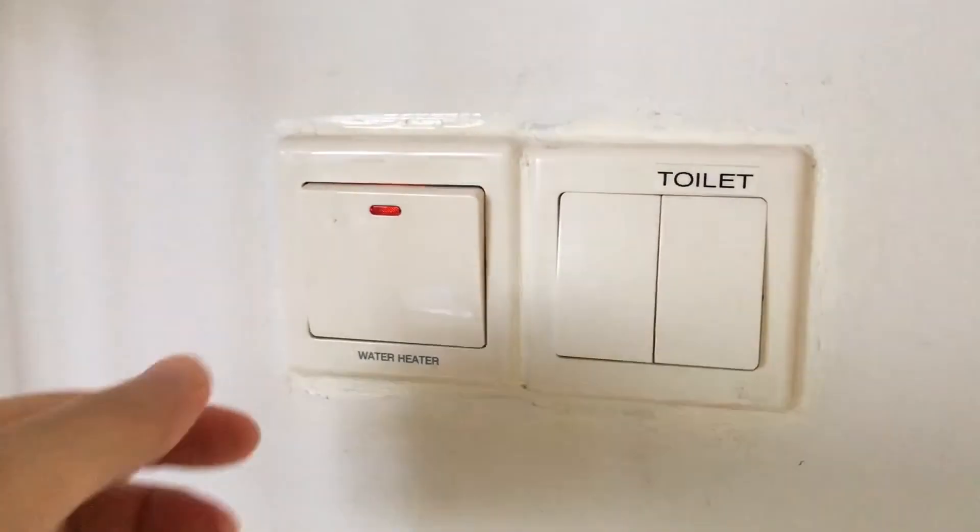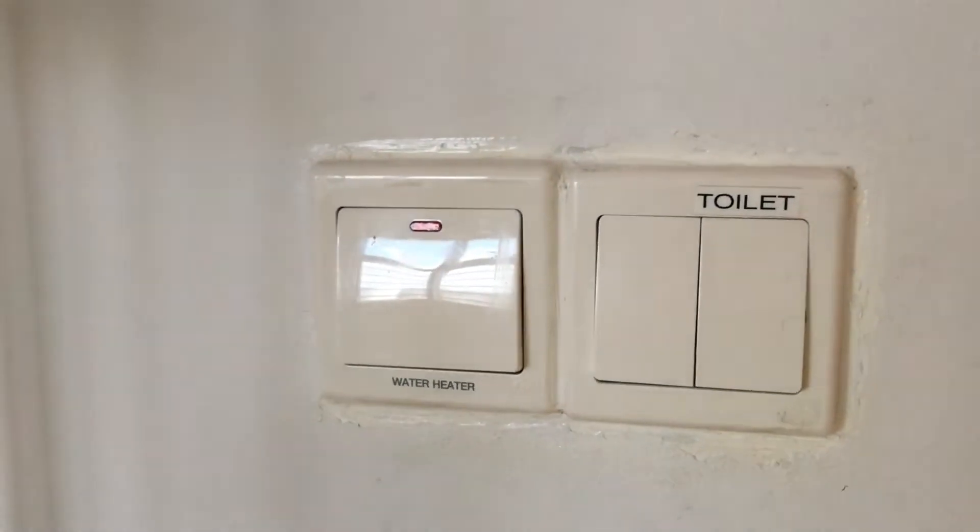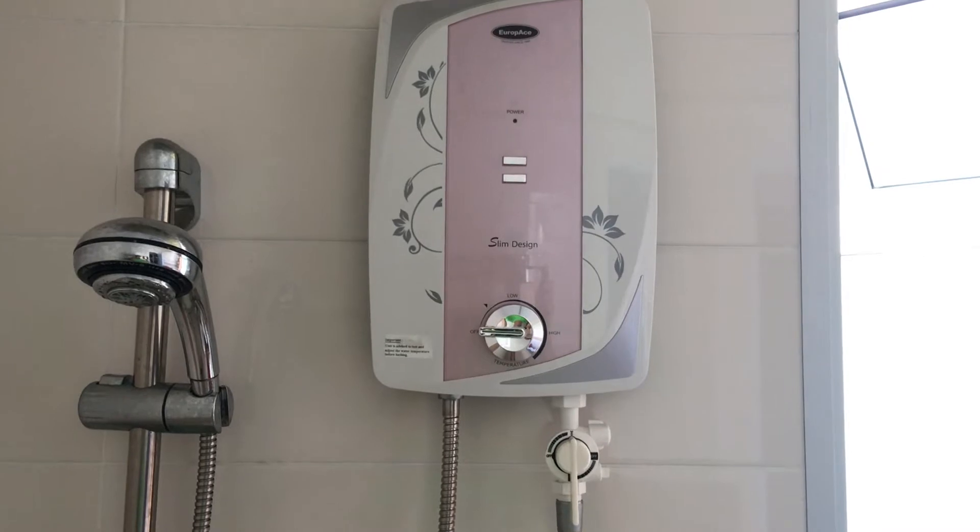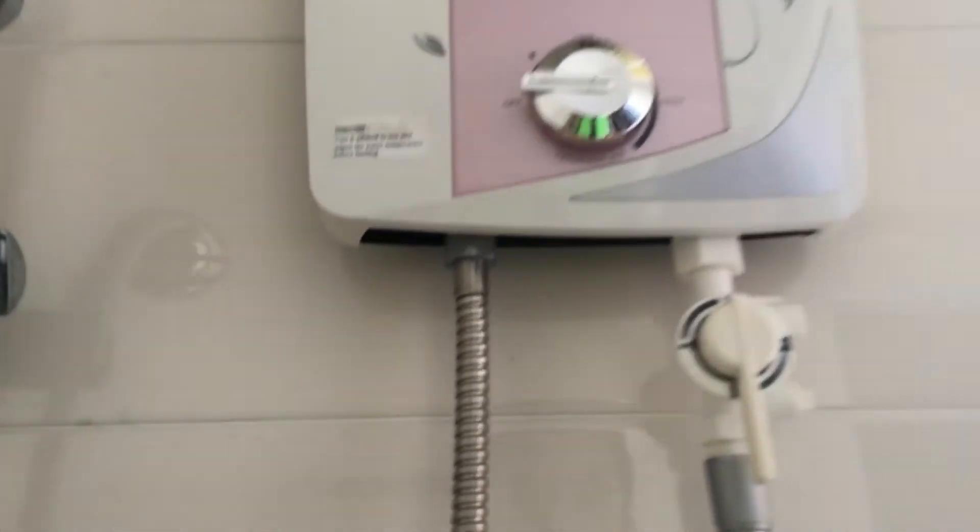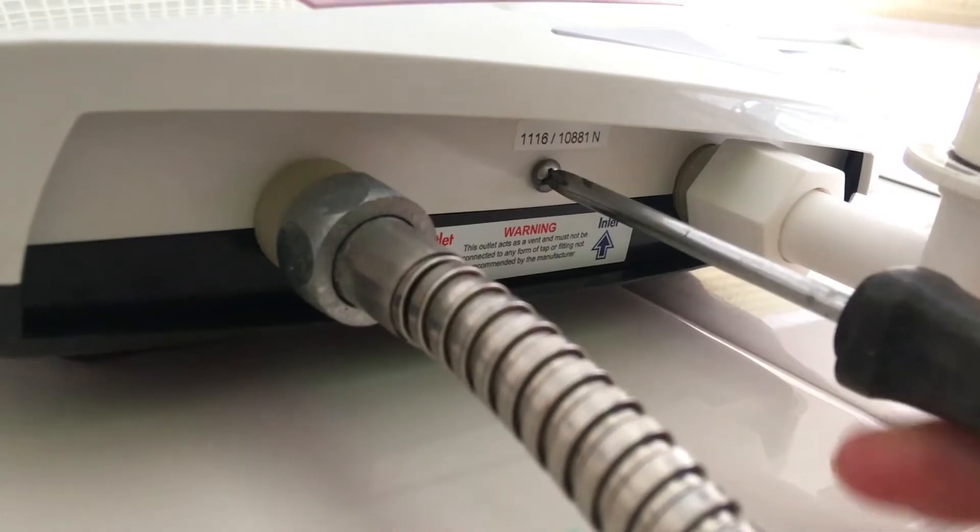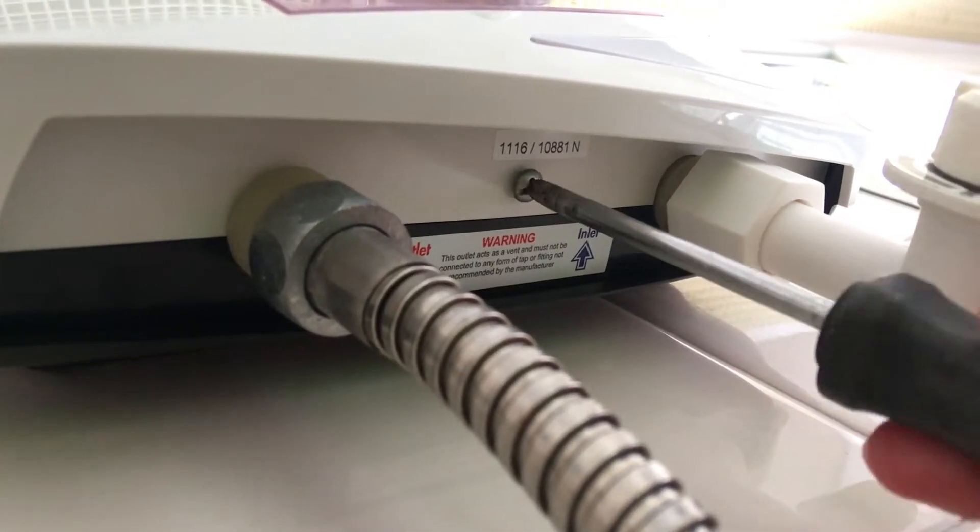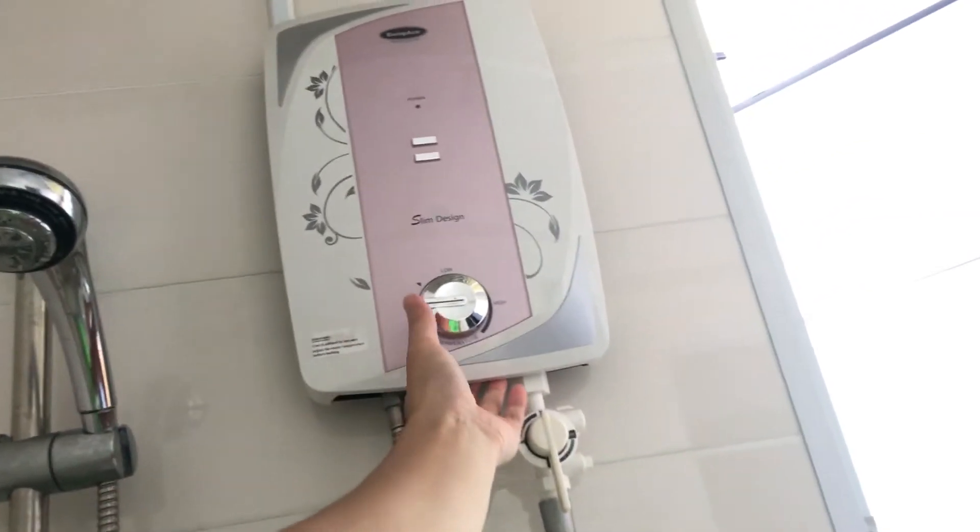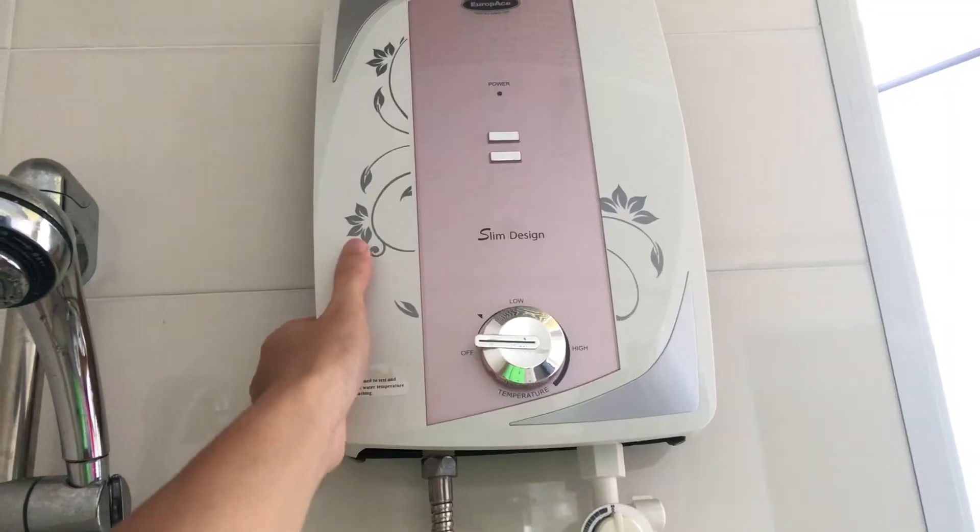Before I work on this water heater, it is important to switch it off so that there is no electricity flowing through it. The cover of this water heater can be removed by removing the screw at the bottom followed by pulling it outwards and upwards.